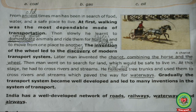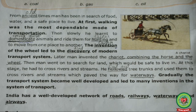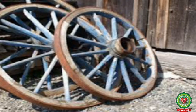Look at the sixth line: 'The invention of the wheel led to the discovery of modern transport system. Later, men invented the chariot combining the horse and wheel.' Underline 'invention' and write 'origin' there. In the seventh line, underline 'discovery' and write 'find'. Underline 'chariot' - its meaning is combining the horse and the wheel.